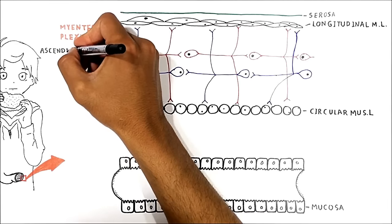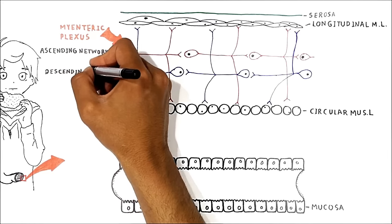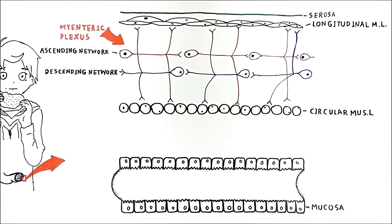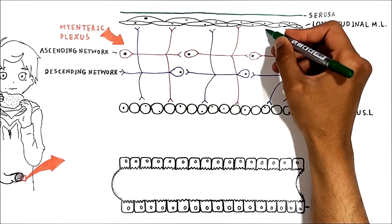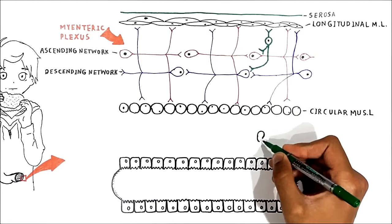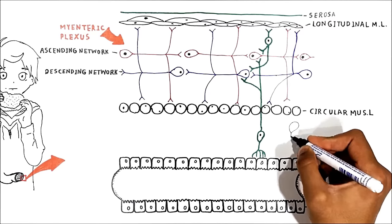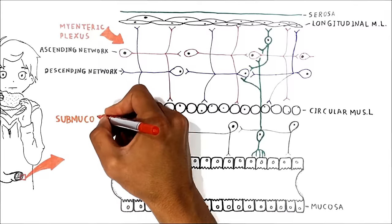The red neurons represent the ascending network of neurons and the blue ones represent the descending network of neurons. We also have two types of sensory neurons: the first type receives stimulus from the smooth muscle, and the second type is located in the submucosa and is stimulated by the chemical composition of the food. Both sensory neurons give branches to the ascending as well as descending network of neurons and stimulate them. And in the submucosa we also have the submucosal plexus.